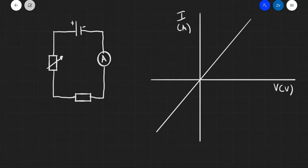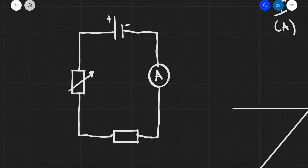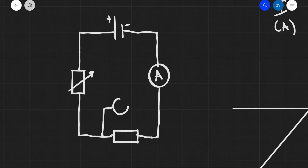In order to find out the IV characteristics we have the following circuit. We have a cell connected to a variable resistor and then the actual resistor across here. To get the IV characteristics we need two things: an ammeter connected in series, and a voltmeter connected across the actual resistor.